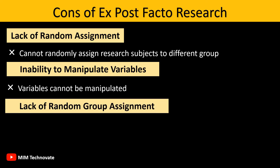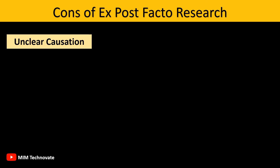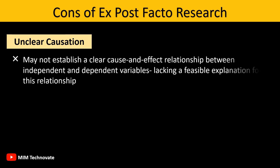Lack of Random Group Assignment: Participants cannot be randomly assigned to different groups, affecting the researcher's internal validity. Unclear Causation: Ex-Post-Facto Research may not establish a clear cause-and-effect relationship between independent and dependent variables, potentially lacking a feasible explanation for this relationship.